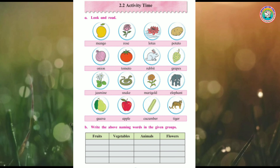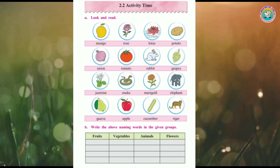Guava. Guava is a fruit, so the first box is fruit. Apple - A-P-P-L-E. Apple is a fruit, write it in the first box. Cucumber - C-U-C-U-M-B-E-R. Cucumber is a vegetable, second box. Tiger - T-I-G-E-R. Tiger is an animal, so write tiger in the third box. Very good!